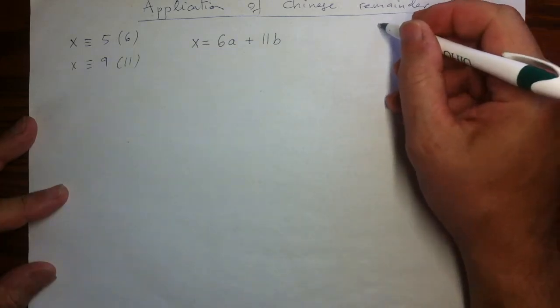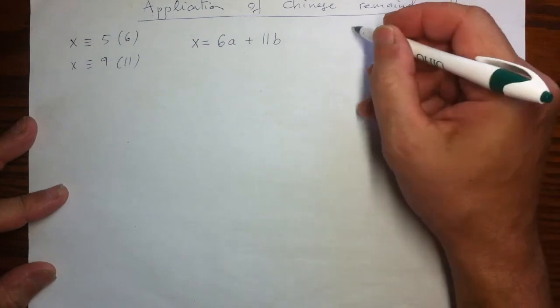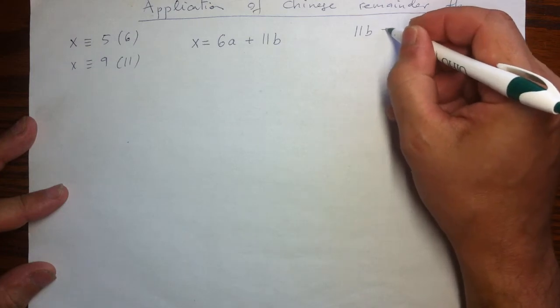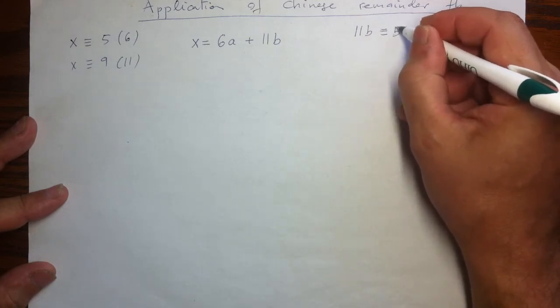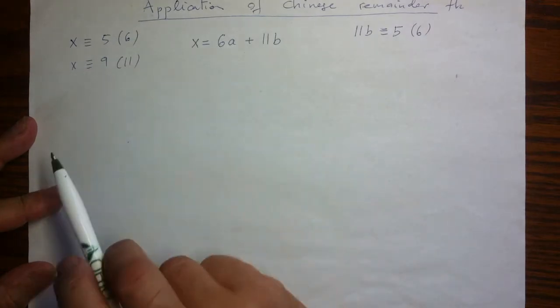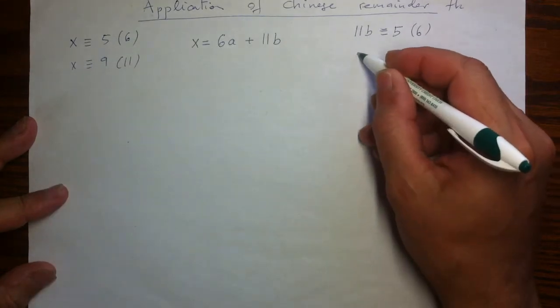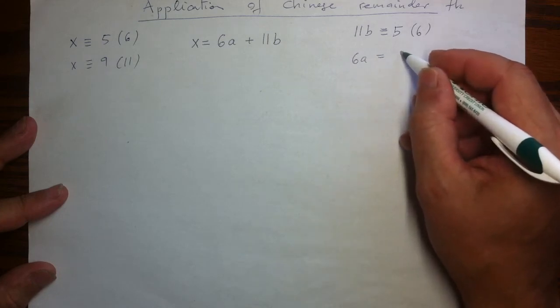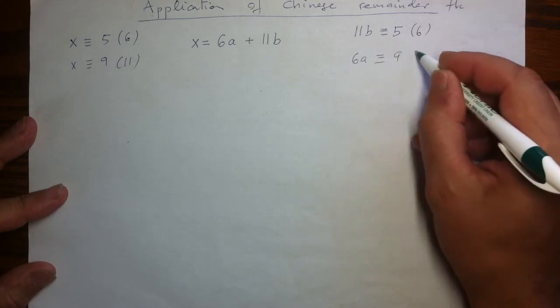So the first congruence mod 6 will leave us with 11b instead of x and that will have to be 5 mod 6. The second gives us 6a congruent to 9 mod 11.